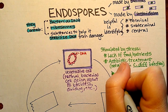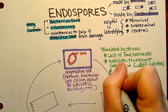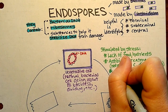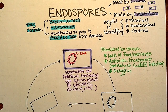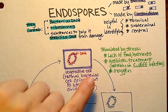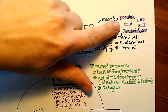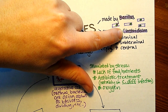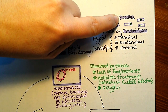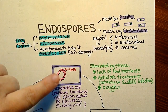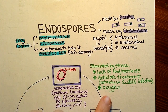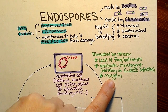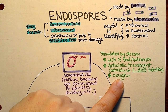Another stress trigger is the presence of oxygen. This might seem like a funny one, but remember that Clostridium species are obligate anaerobes, and Bacillus, although it can grow in the presence of oxygen, seems to prefer a low-oxygen environment for its vegetative cell.